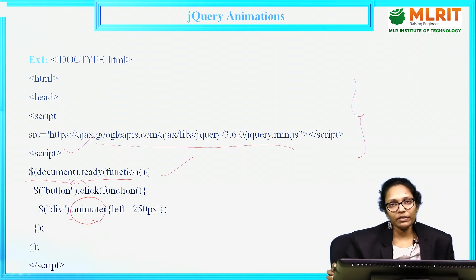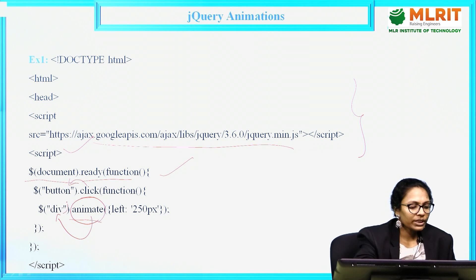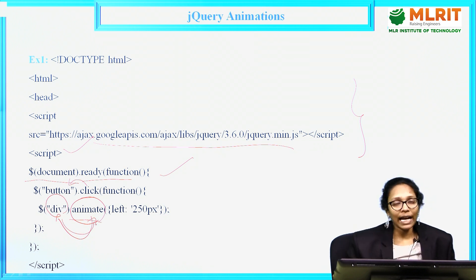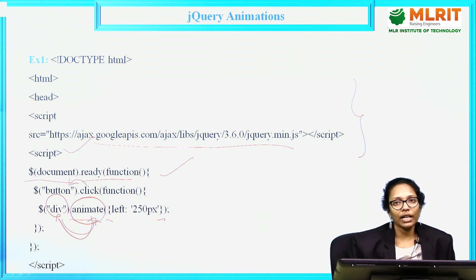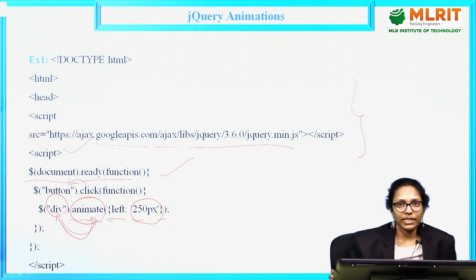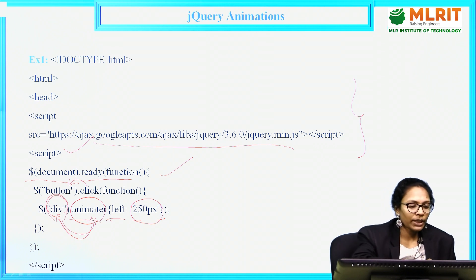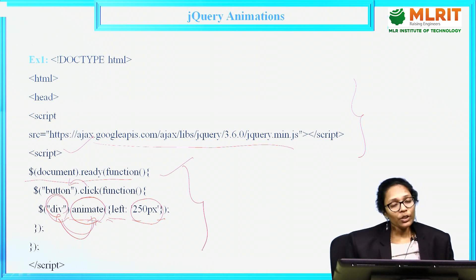To perform those animations I am calling the animate function on the div element — we are applying animate to the div tag. The animate function has three parameters. The first parameter is params, specified within the curly braces. Here I am specifying only one style — from left, move 250 pixels. Whenever you click this button, that division should move from left 250 pixels. We need to create the button whenever you click on it to apply this animation.